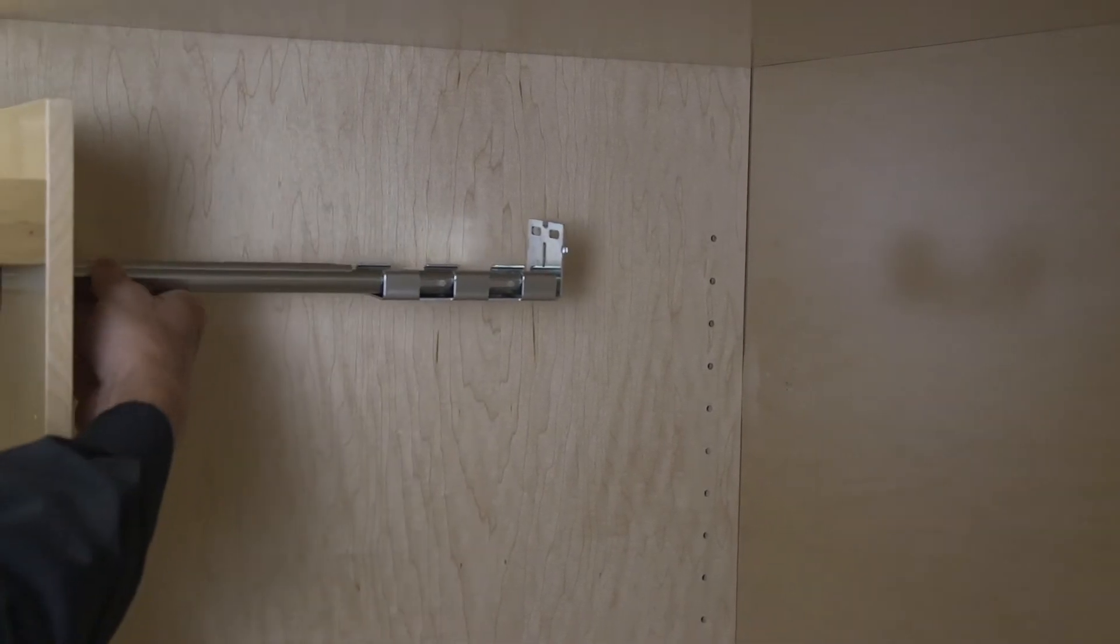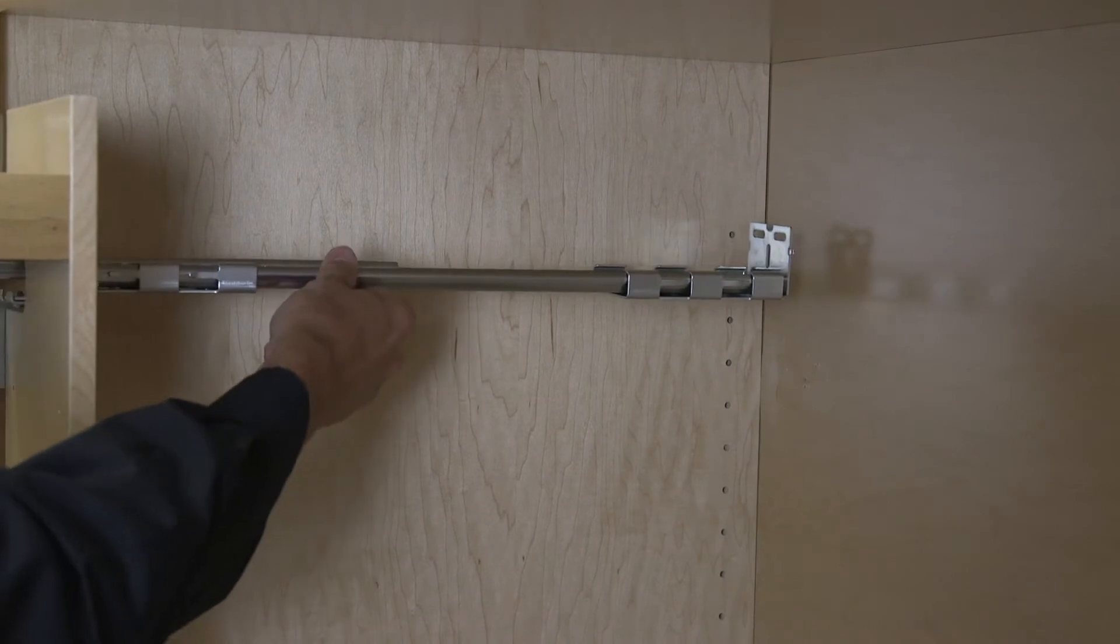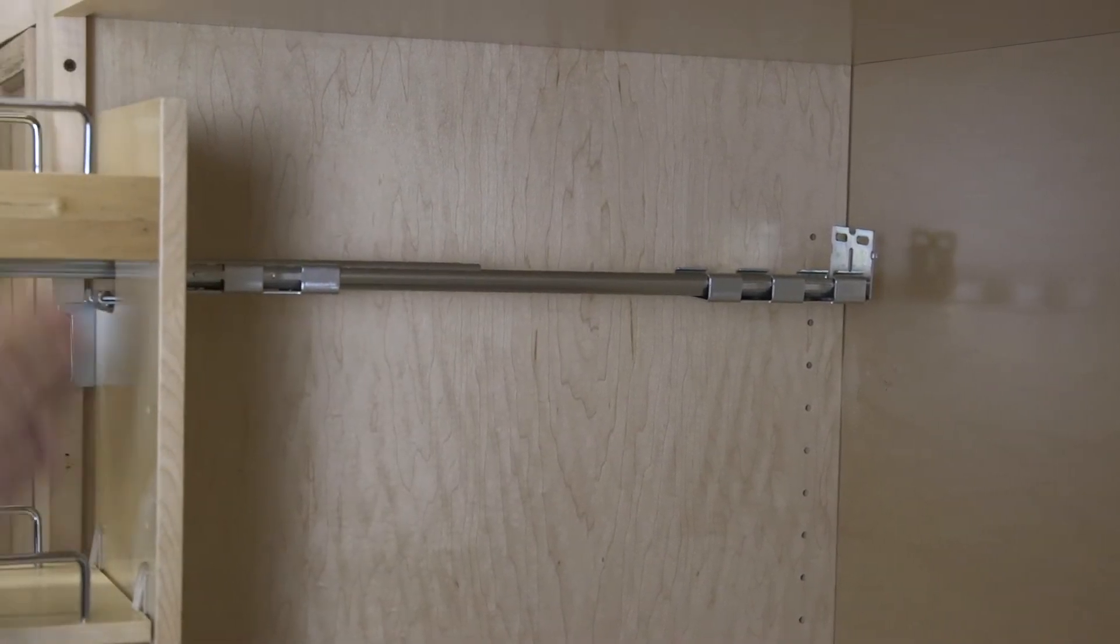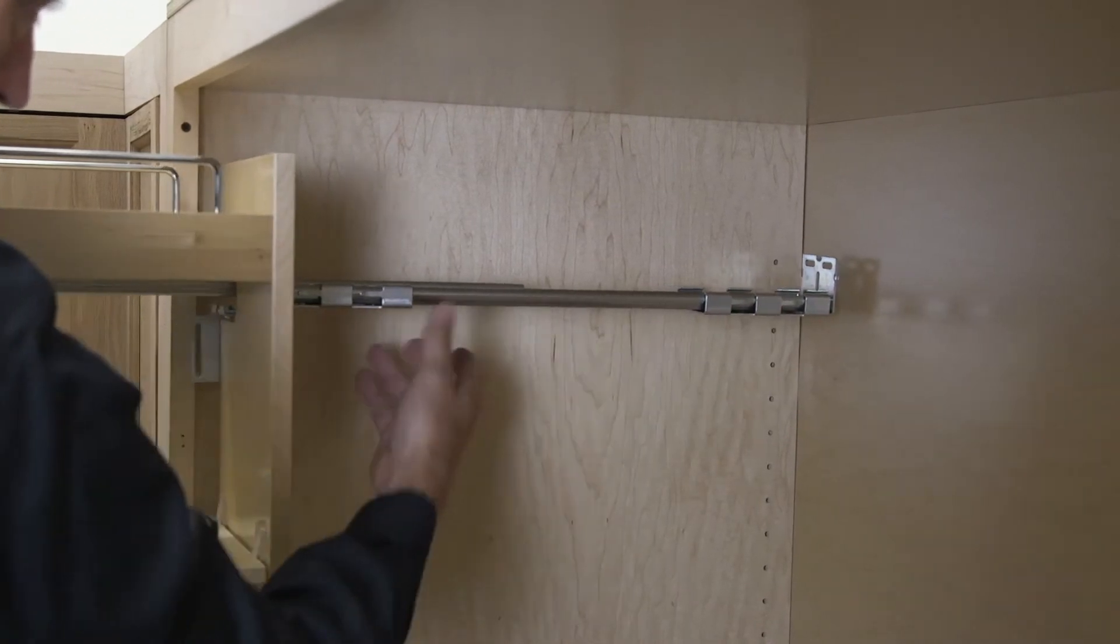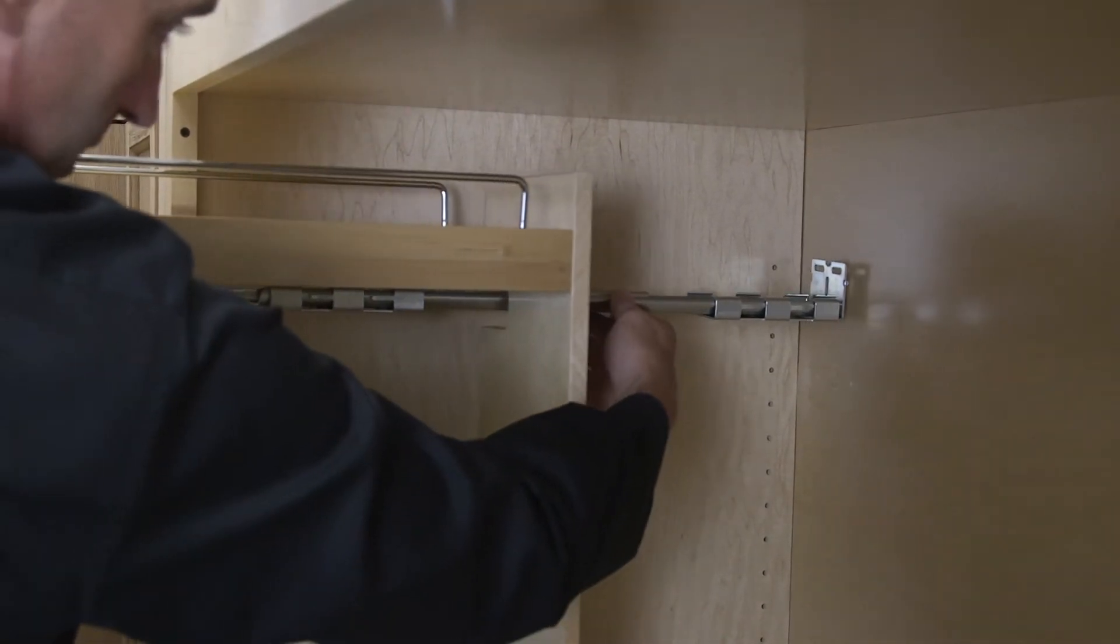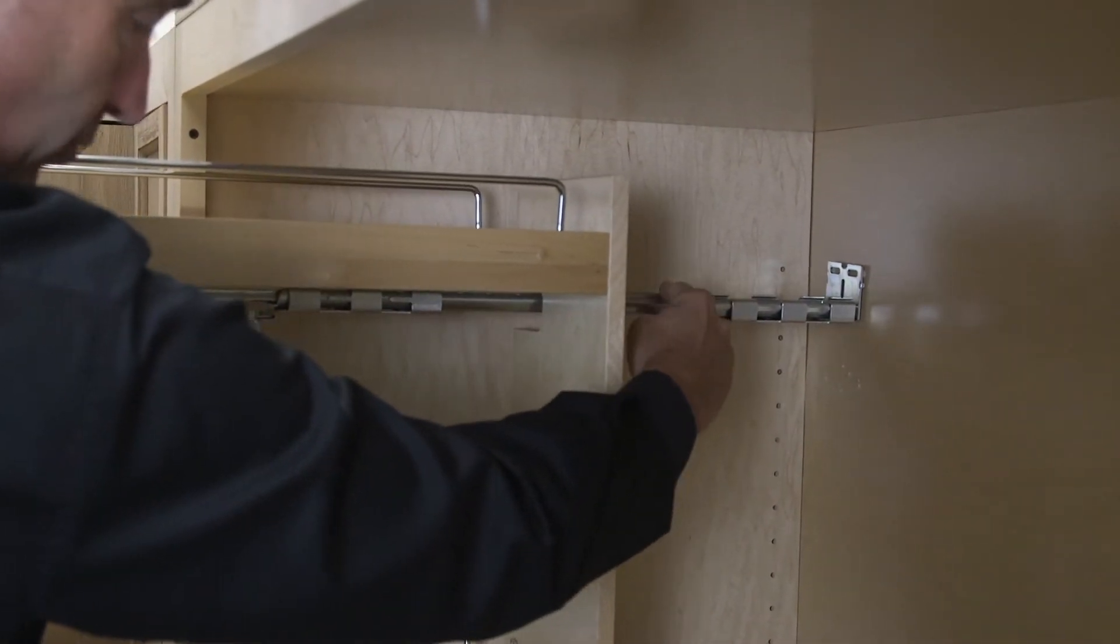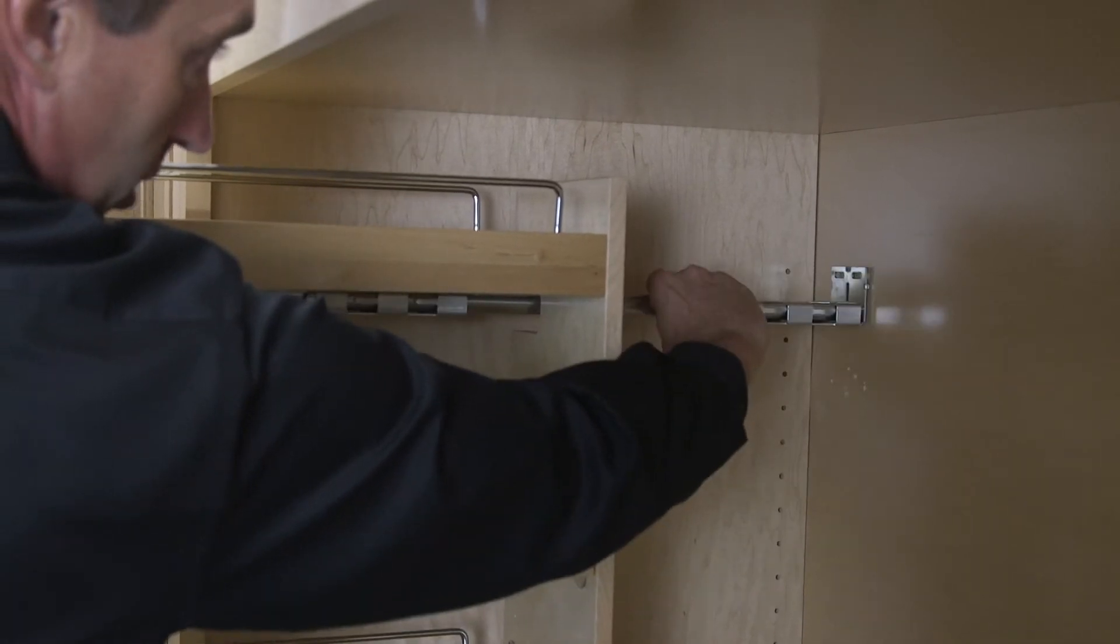We have noticed that some are pulling the unit all the way out when they're doing this. Just the weight of the unit will have a tendency to push the back of the slide up. It's important that we only pull this about halfway out when we do our tapping motion and pick up our self-indexing locations.